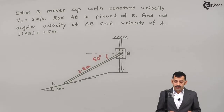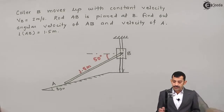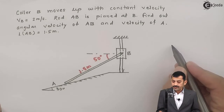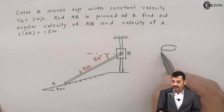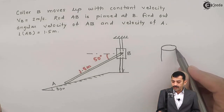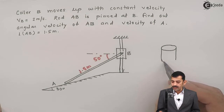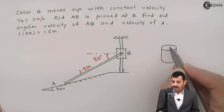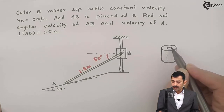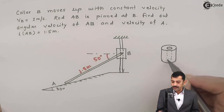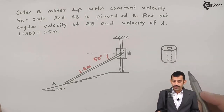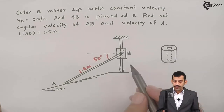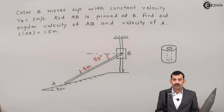Now, what does this collar mean? It is a sort of hollow cylinder. Collar B is something like a hollow cylinder with a central hole, and the rod is inserted through this hole, so the collar — the hollow cylinder — can slide in the upward or downward direction.